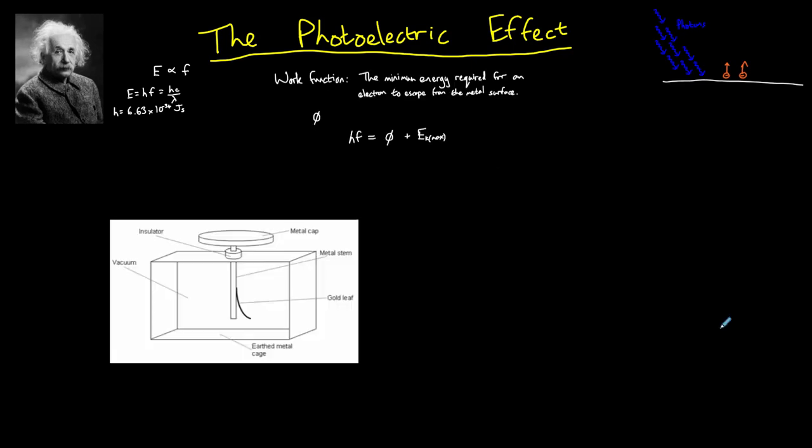The classic experiment to demonstrate the photoelectric effect is using a gold leaf electroscope. The electroscope is negatively charged, causing the gold leaf to be repelled from the stem. If electrons are able to escape from the plate at the top, the electroscope will become neutral and the gold leaf will fall back into place.